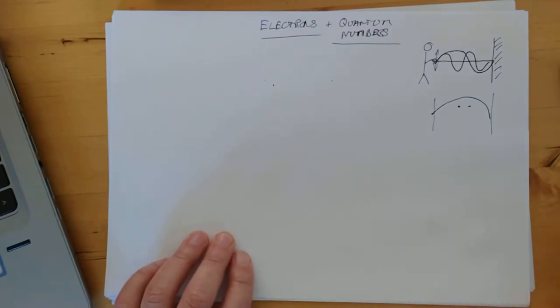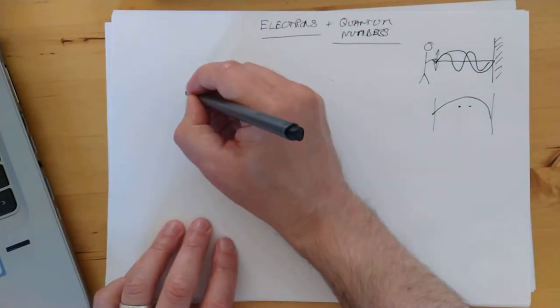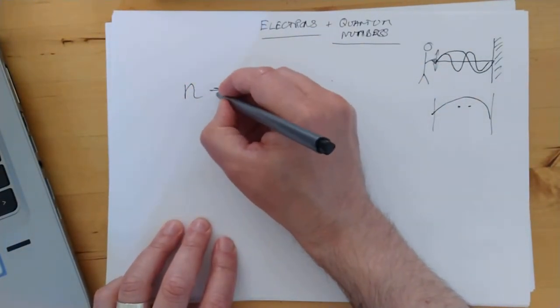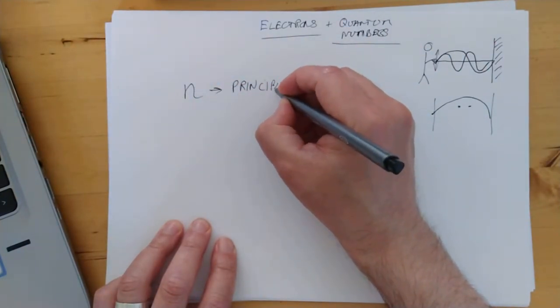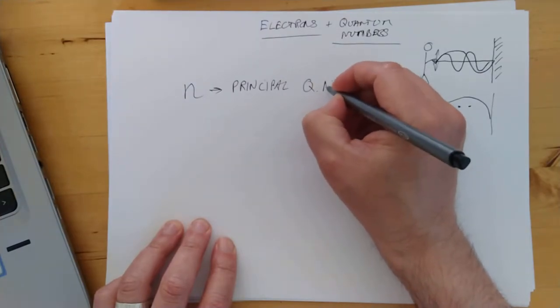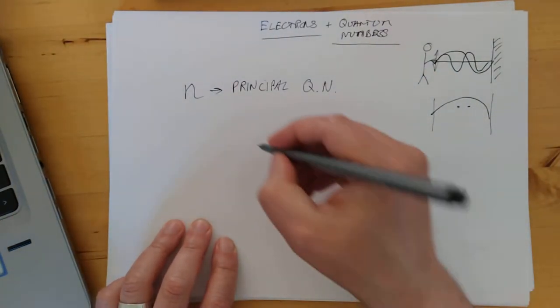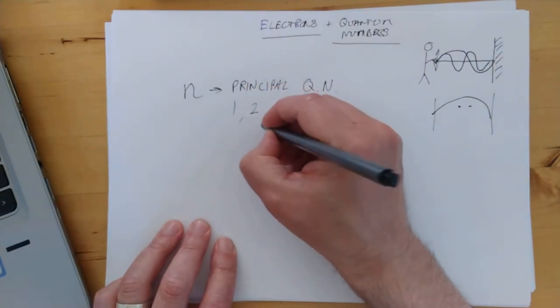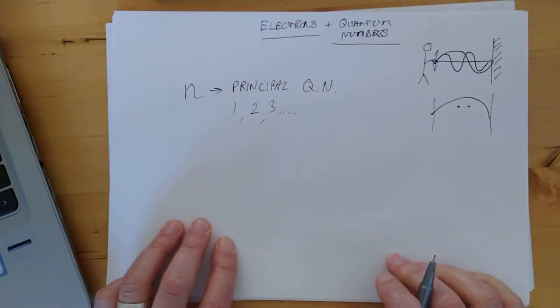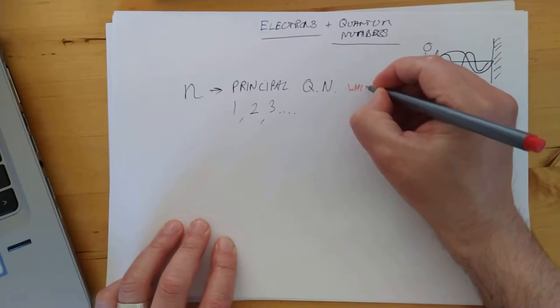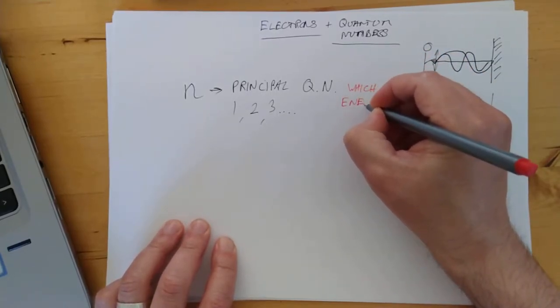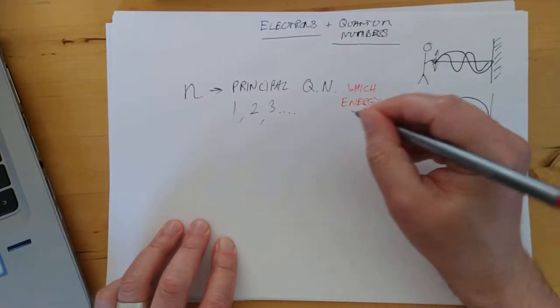Let's start with the quantum numbers. Let's go with the principal quantum number, N. So N is what's called the principal quantum number. It has values of 1, 2, 3, upwards. What does it tell you?